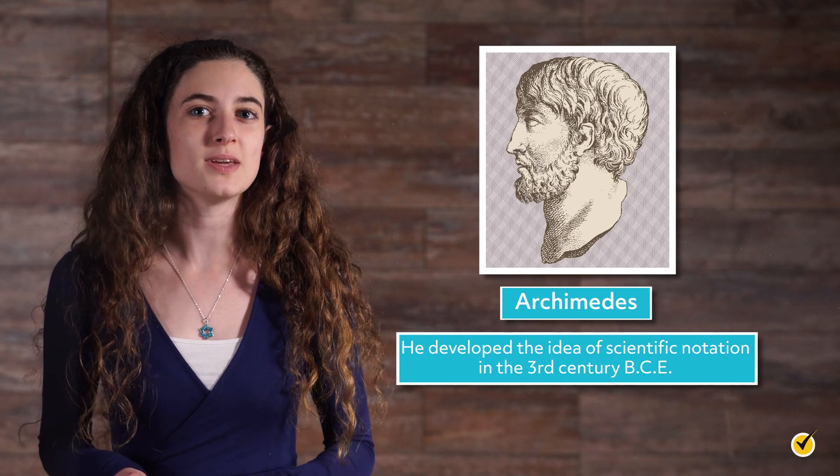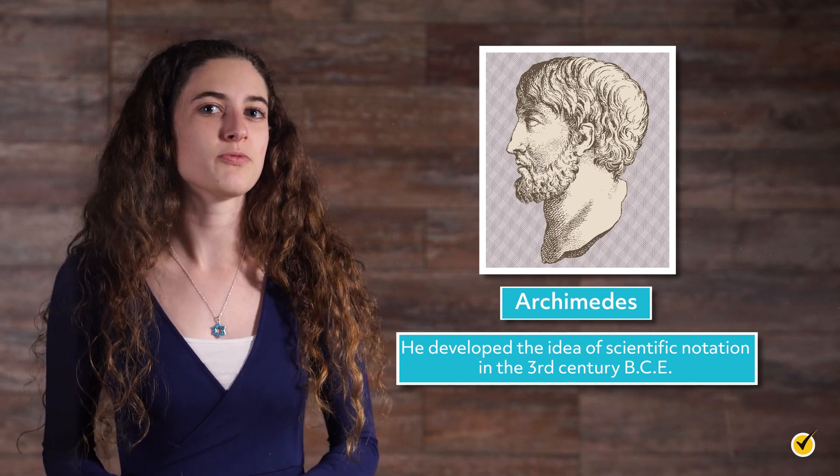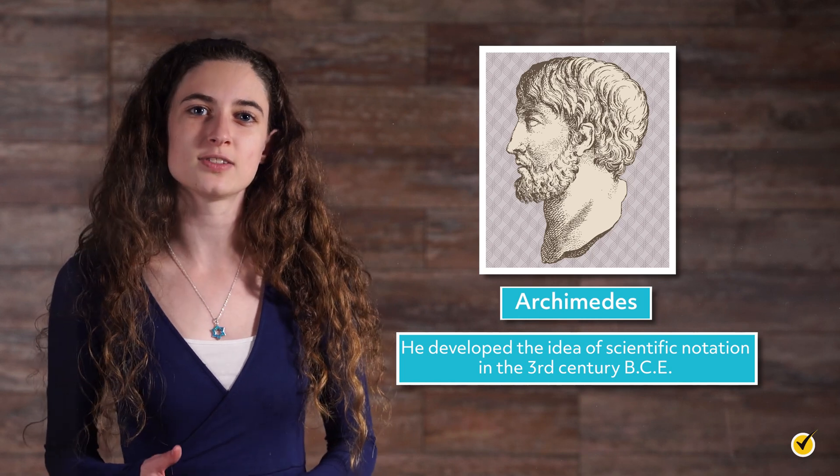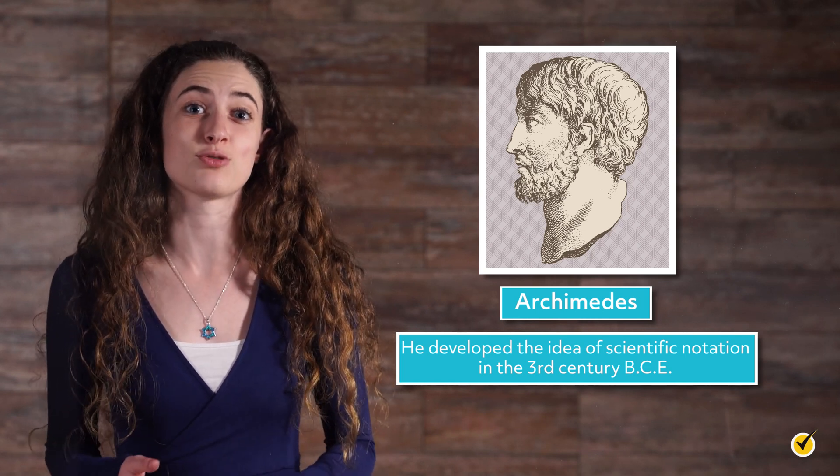First, what is scientific notation? The idea of scientific notation was developed by Archimedes in the 3rd century BCE, where he outlined a system for calculating the number of grains of sand in the universe, which he found to be 1 followed by 63 zeros. His work was based on place value, a novel concept at the time.